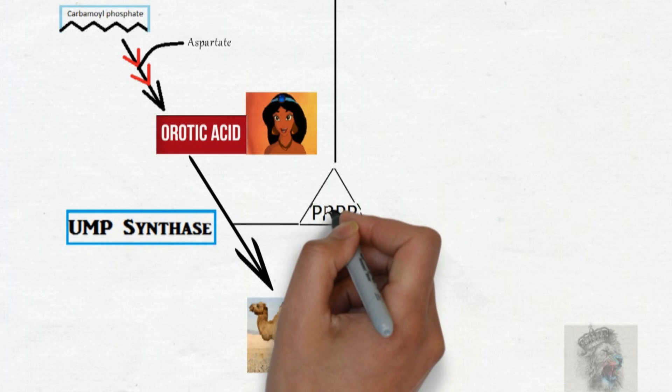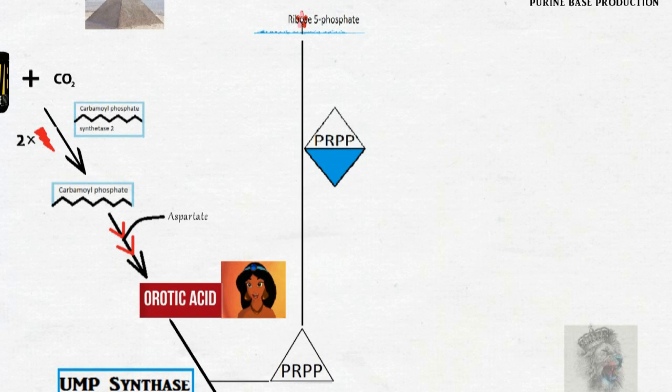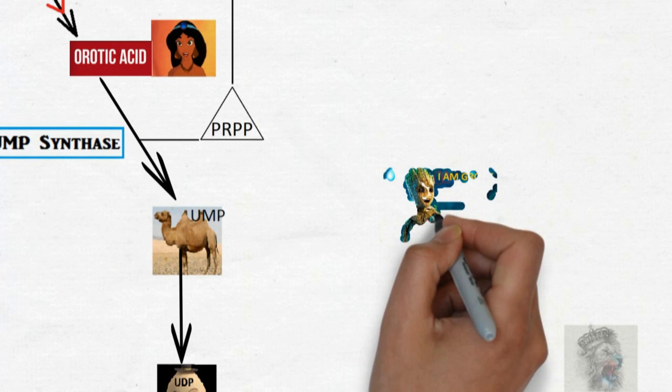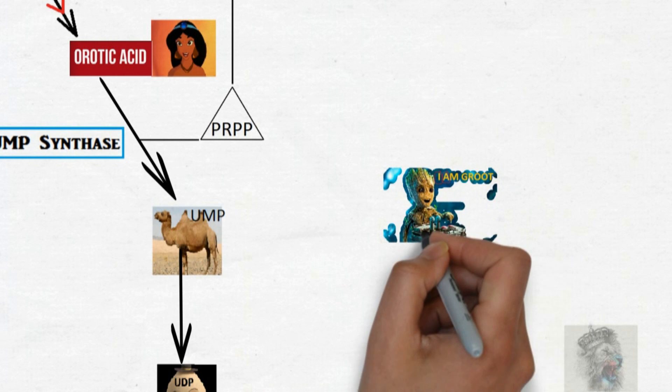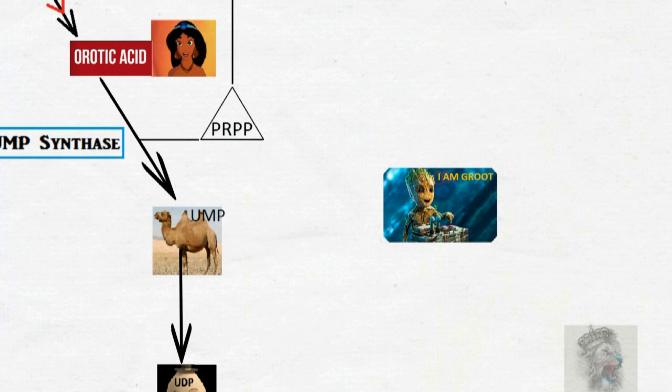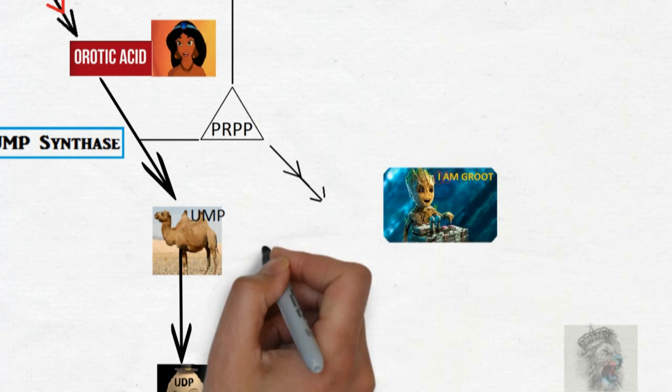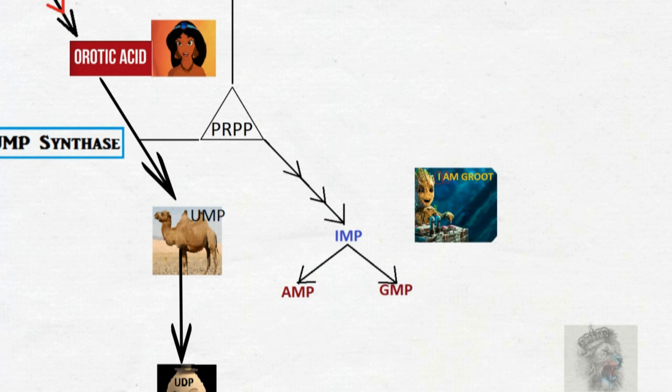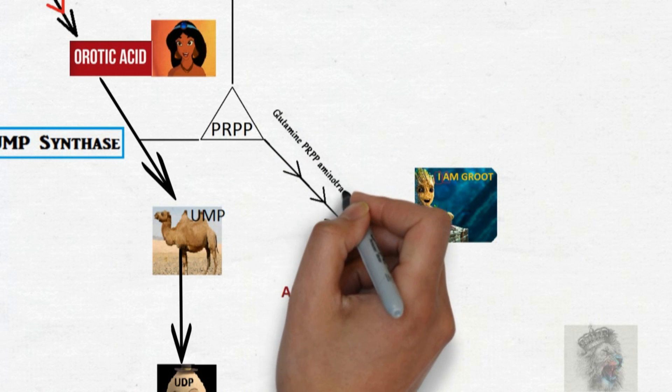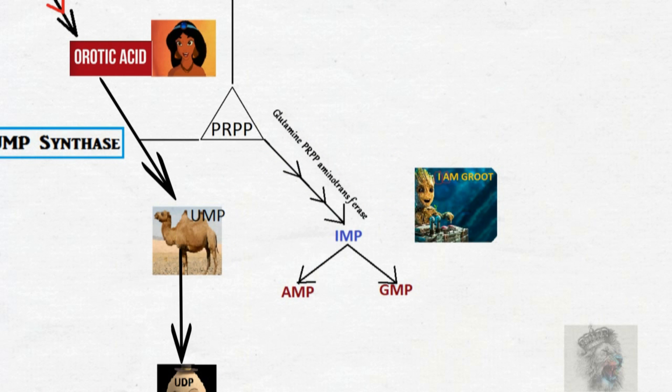When she was holding the flower PRPP, she wished that I want to leave the castle, and then the genie who is called Groot, he told 'I am Groot,' and then he pressed the button to kill the king. 'I am Groot'—I stands for IMP, am stands for AMP, Groot stands for GMP.